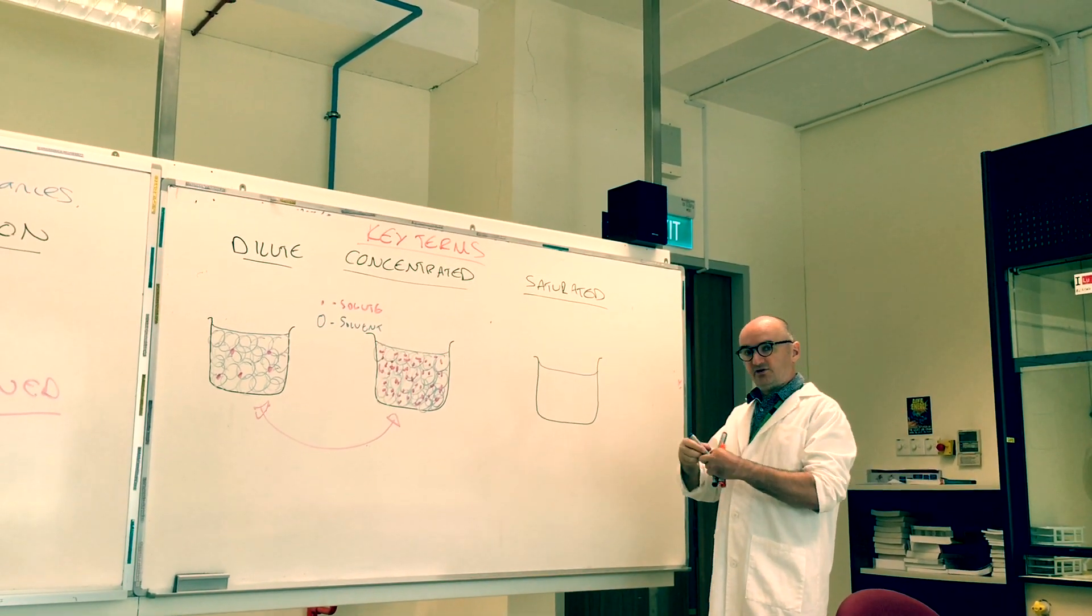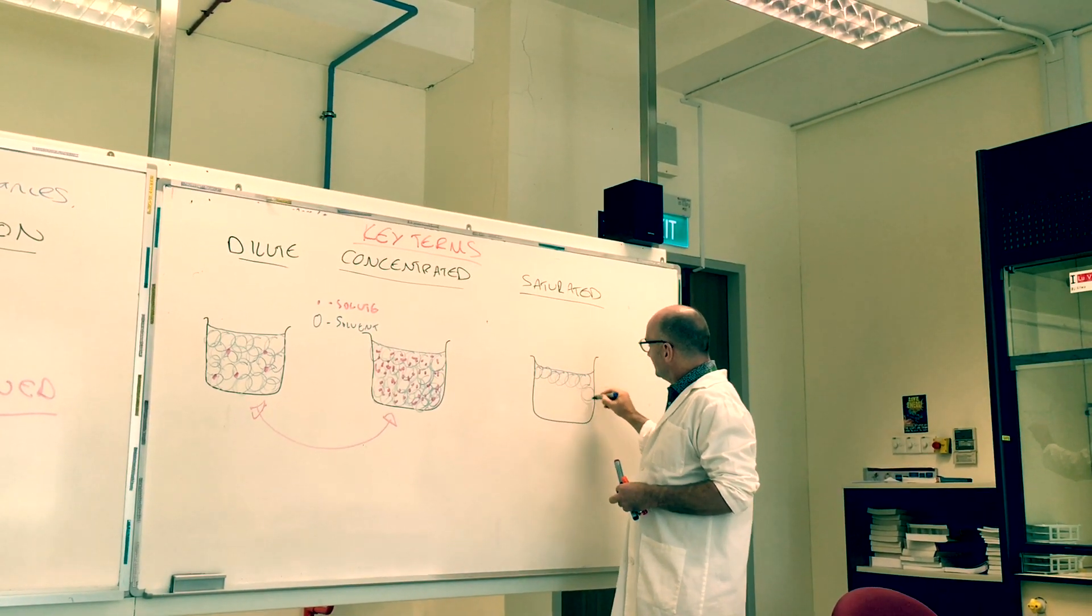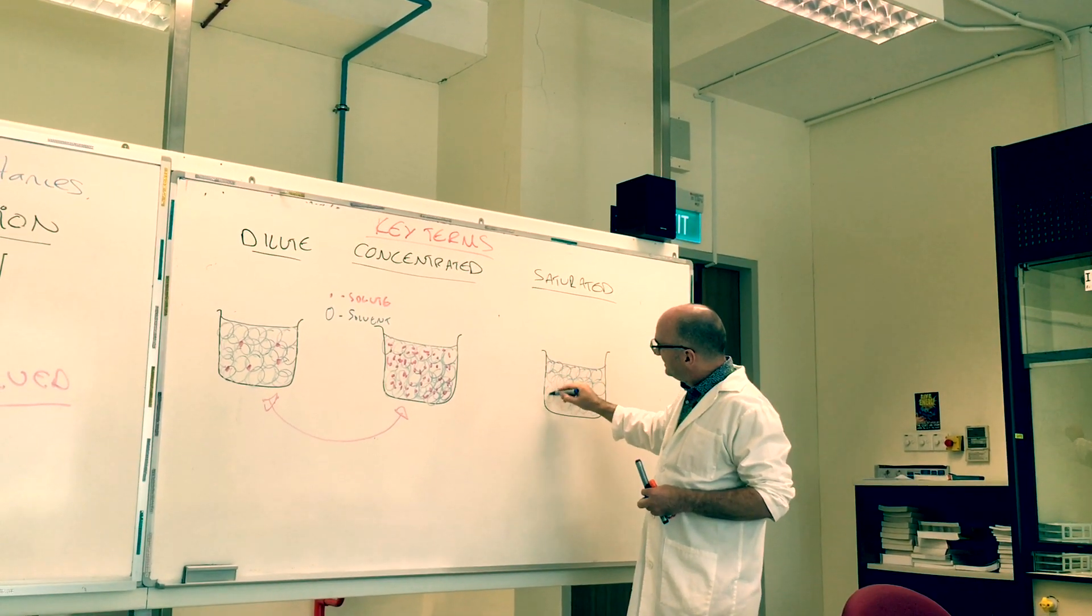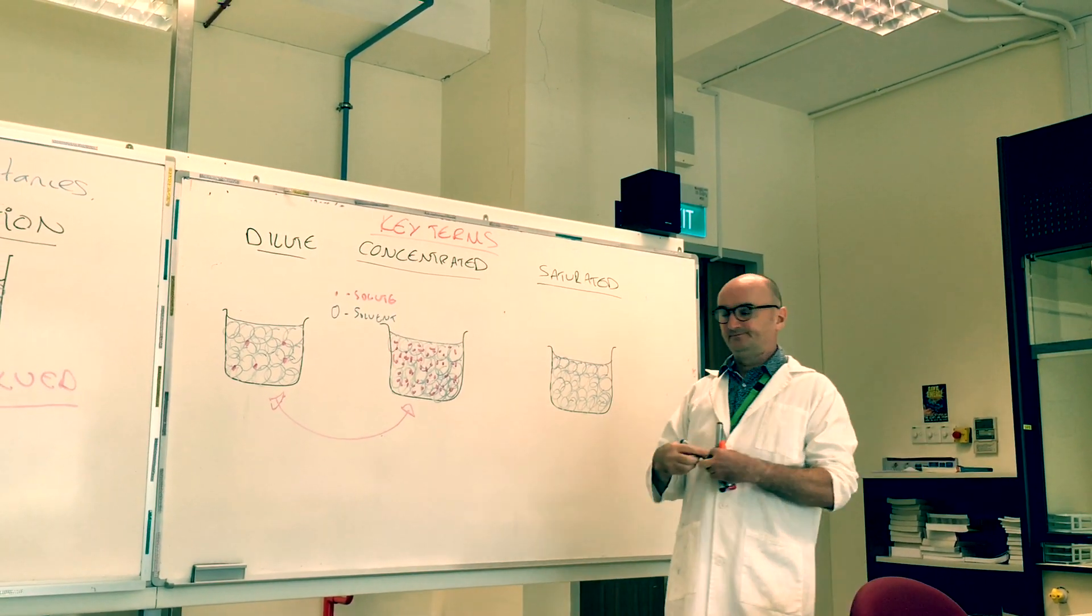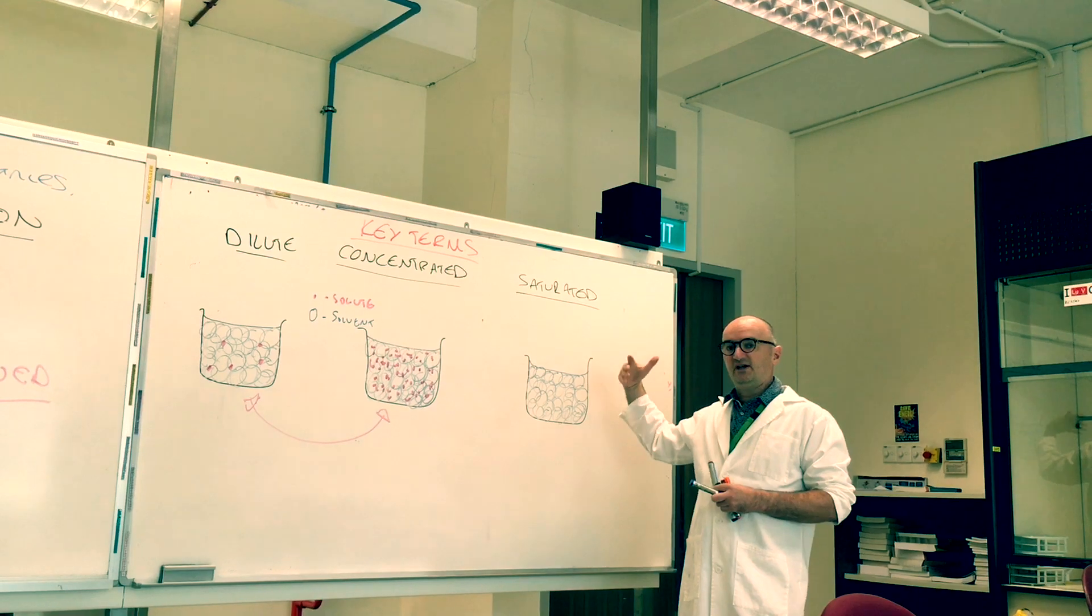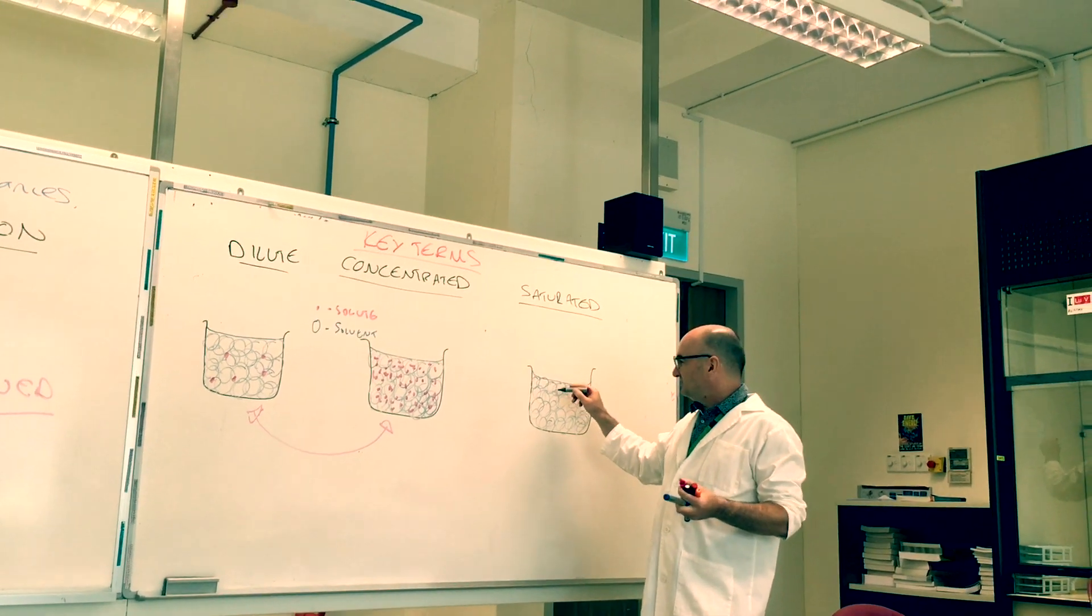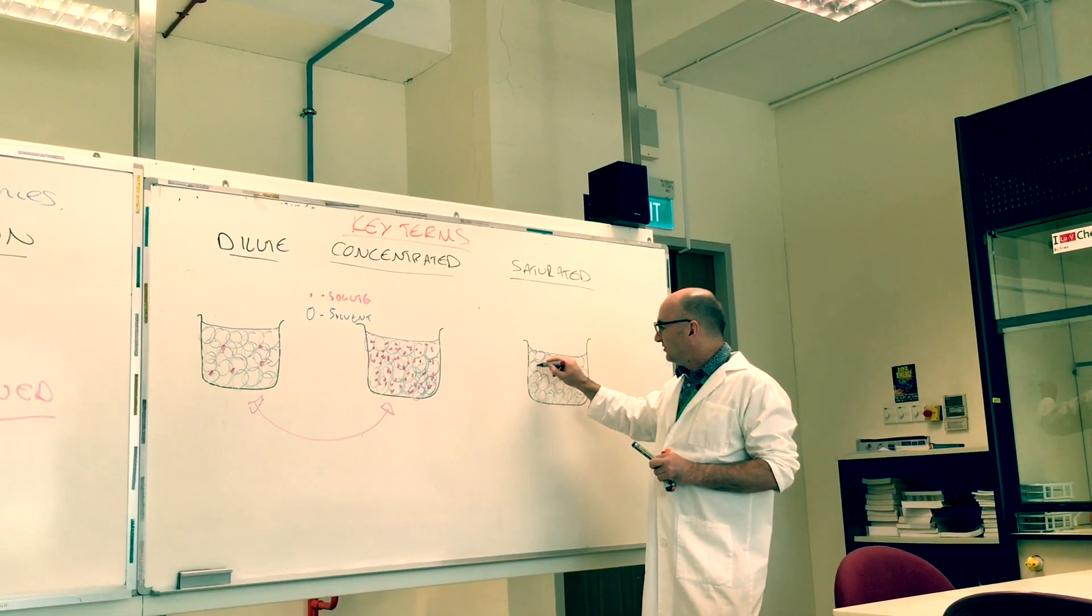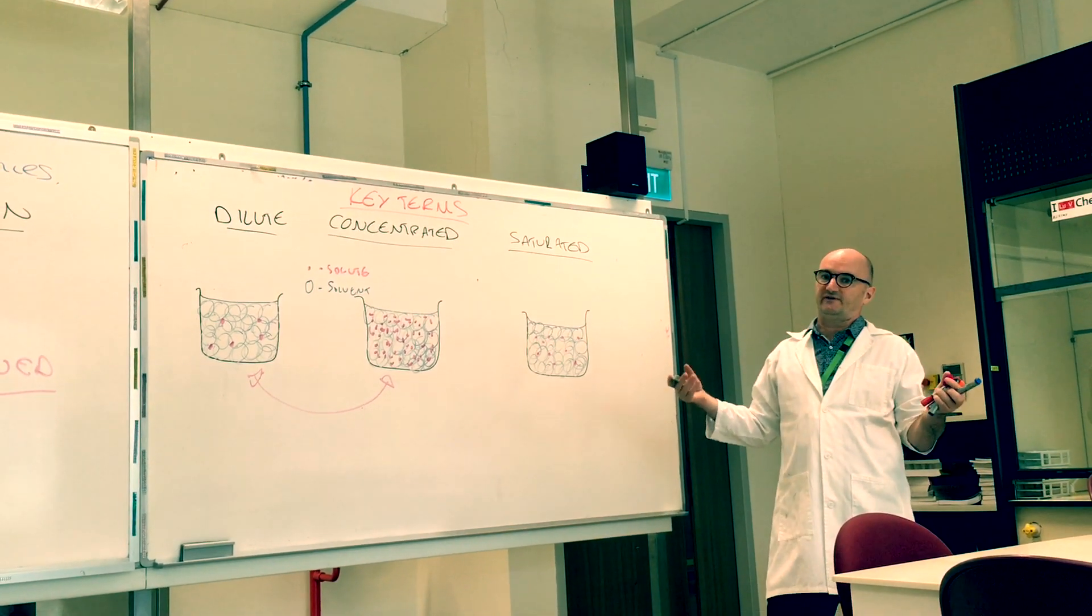So we have dilute and concentrated. The final thing we need to have is, do you remember earlier when I was talking about the houses in the street? I said there are 50 houses and there are four people in each house so the streets can hold 200 people. Those houses are not houses obviously, it's a model. These houses are water molecules. I could draw 200 pieces of solute but I'm not going to. Let's say this water can only hold 10 molecules of solute, 1, 2, 3, 4, 5, 6, 7, 8, 9, 10.